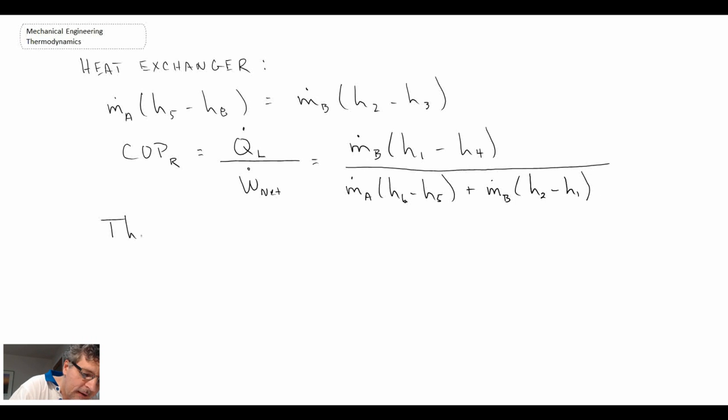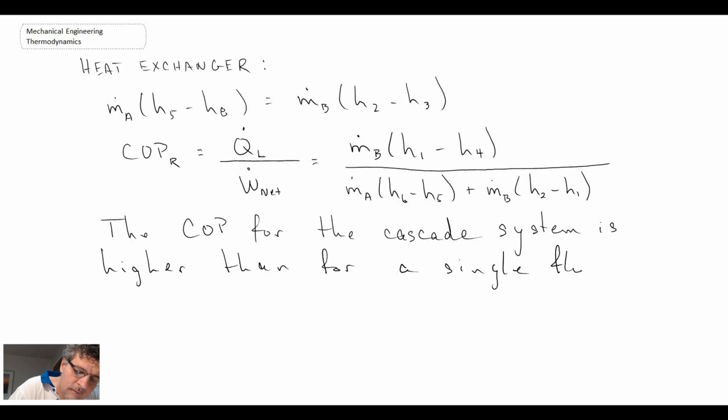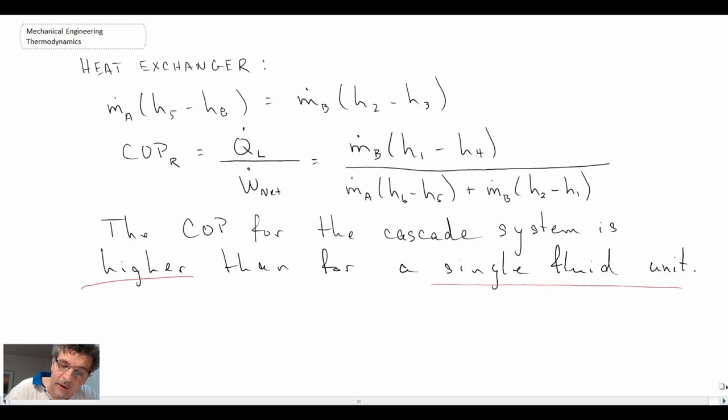What we find, no surprise, is that the coefficient of performance for the cascade system is higher than for a single fluid unit. If we look back at our TS diagram, that's because of the savings that we get either through increased refrigeration or reduced work.